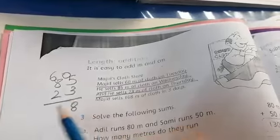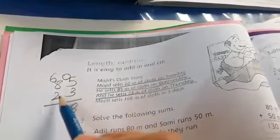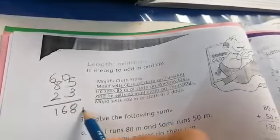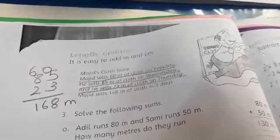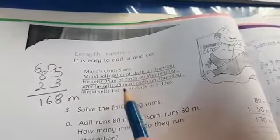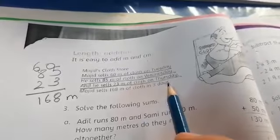It's 5 plus 3, 8. 6, 8 plus 2, 10. 10 plus 6, 168 meter. Majid sells 168 meter of clothes in 3 days.